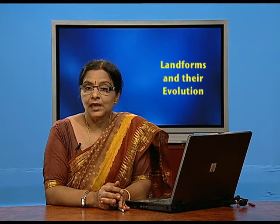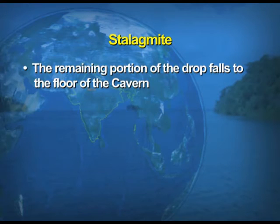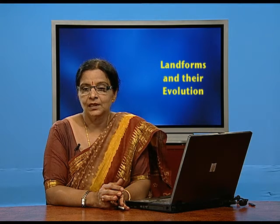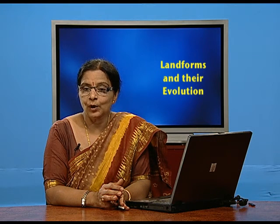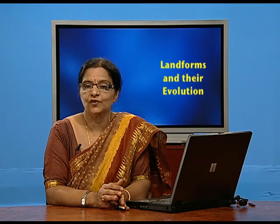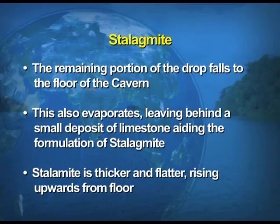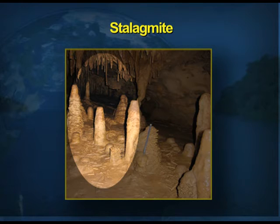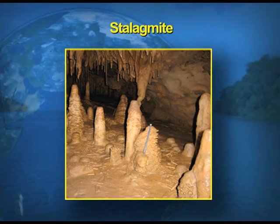The remaining portion of each drop falls to the floor of the cave, evaporates, and leaves behind a small deposit of limestone, aiding the formation of a stalagmite. Since stalagmites are formed from the bottom towards the top, the floor of the cave is the base and the growth is upward toward the roof. Stalagmites are thicker and flatter, rising upward from the floor.